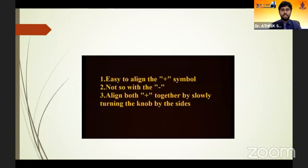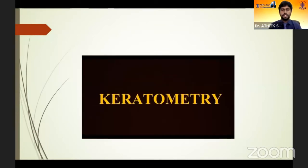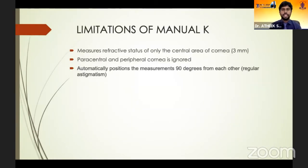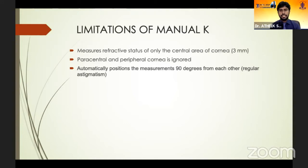Ensure that the patient is positioned well — these small things can give wrong values. The main limitations of manual keratometry include that it can only measure the central cornea; the peripheral and paracentral cornea are ignored. Another drawback is that this equipment assumes the cornea is always regular and symmetrical about 90 degrees apart. In cases with subtle skewing, this can be missed.